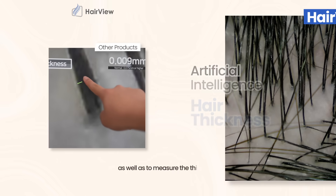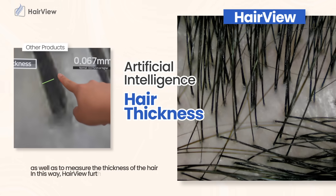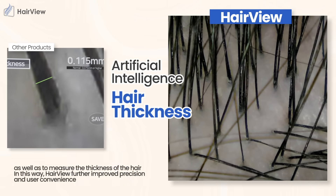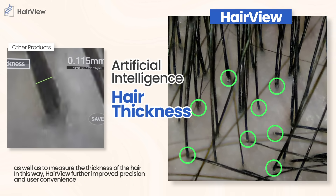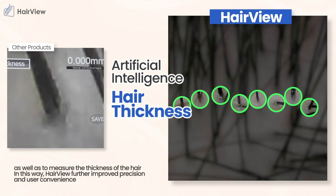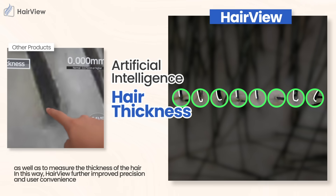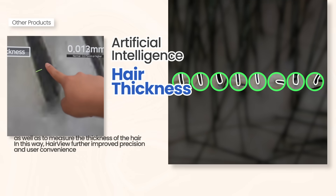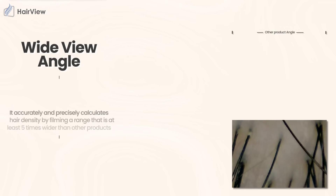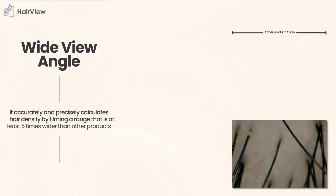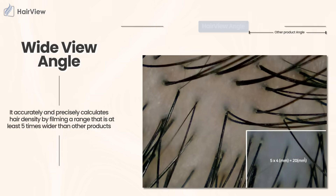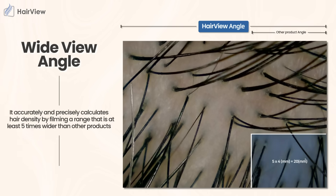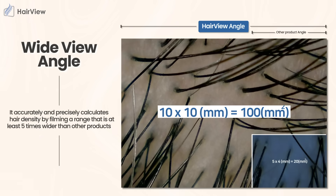As well as to measure the thickness of the hair. In this way, HairView further improved precision and user convenience. It accurately and precisely calculates hair density by covering a range that is at least five times wider than other products.